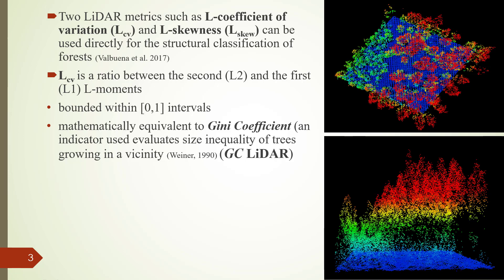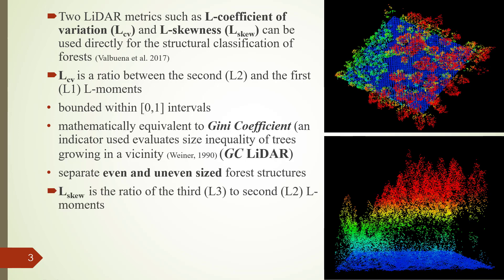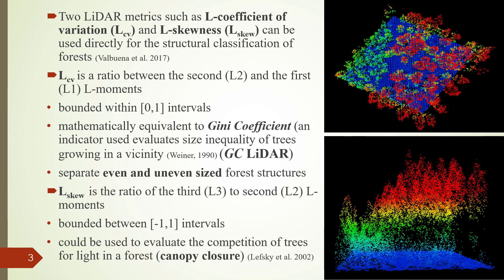So LCV can be used to separate even and uneven size forest structures. The second metric, L skewness, is the ratio between the third and second L-moments, and it is bounded between minus 1 to 1. This can be used to evaluate canopy closure — specifically to separate open canopy or ecotopic areas from oligotopic areas with closed canopy.